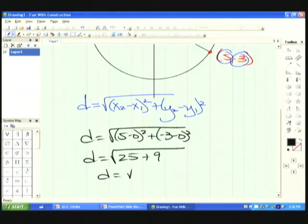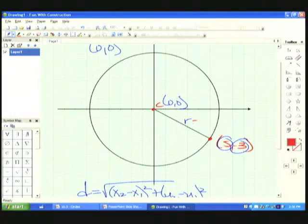So I get the distance is square root of 34. And that just happens to be the radius. That distance is square root 34.